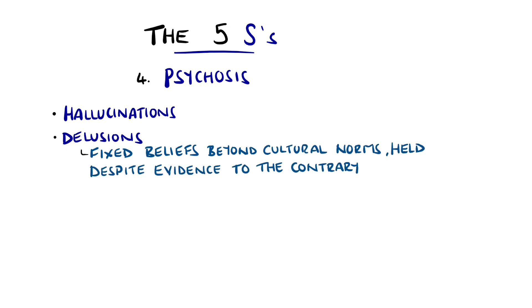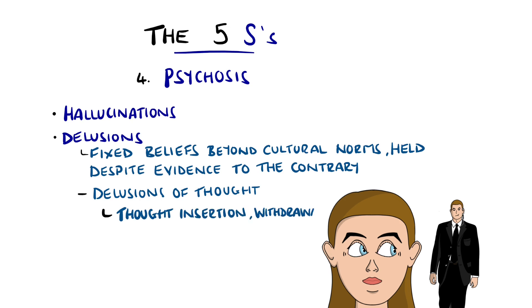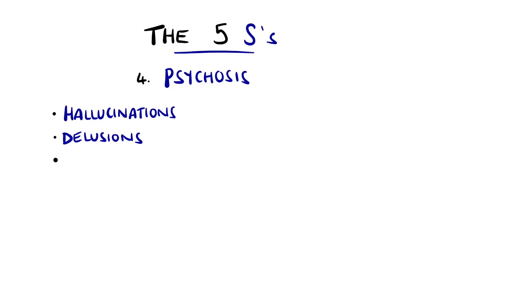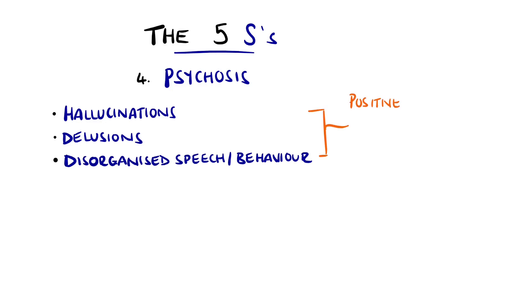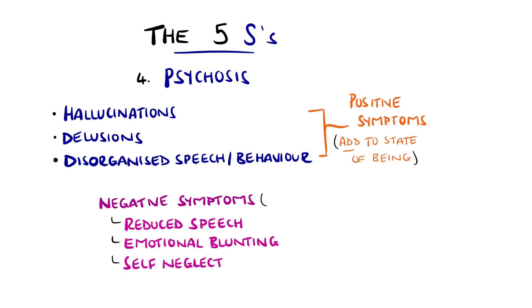Delusions of thought include thought withdrawal or broadcasting, or delusions of reference, where ordinary stimuli are given particular importance — the classic example being a person believing the TV presenter is talking directly to them. Delusions, hallucinations, disorganised speech and behaviour are considered positive symptoms, where the person perceives more than standard sensations. But negative symptoms also exist, like reduced speech, emotional blunting and self-neglect, where this takes away from the person's state of being.